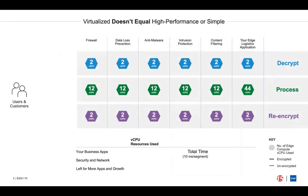We've shown how F5 Big IP Virtual Edition, supported by Intel QAT, has the performance of a dedicated solution on COTS x86 hardware. You're likely asking: why do I need to do this, and how do I achieve these results?